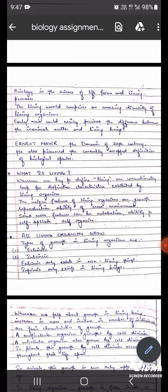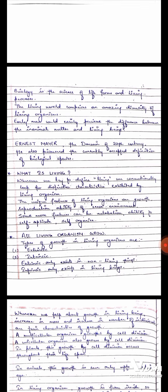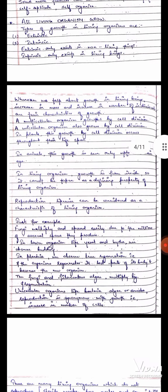All living organisms grow. Two types of growth are extrinsic and intrinsic. Extrinsic only exists in non-living things and intrinsic only exists in living beings. Whenever we talk about growth in living beings, increase in mass and increase in number of individuals are twin characteristics of growth.